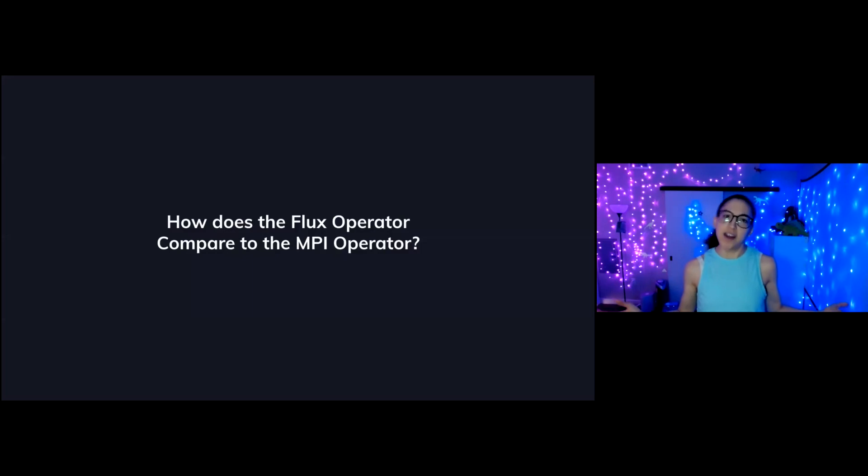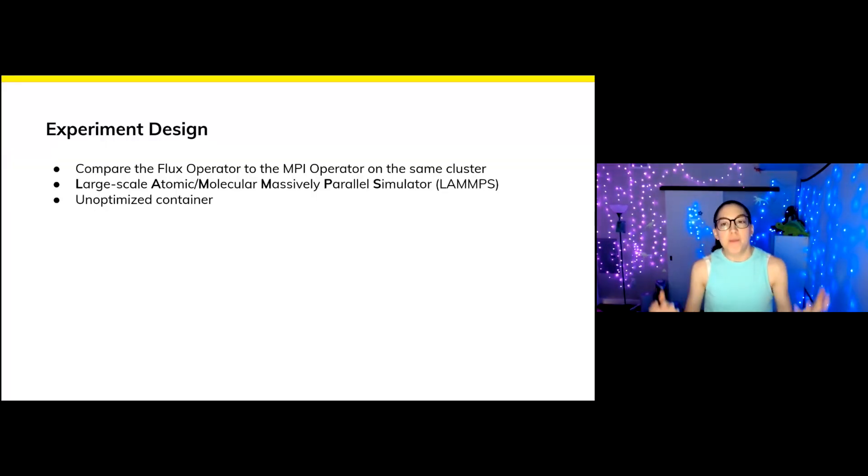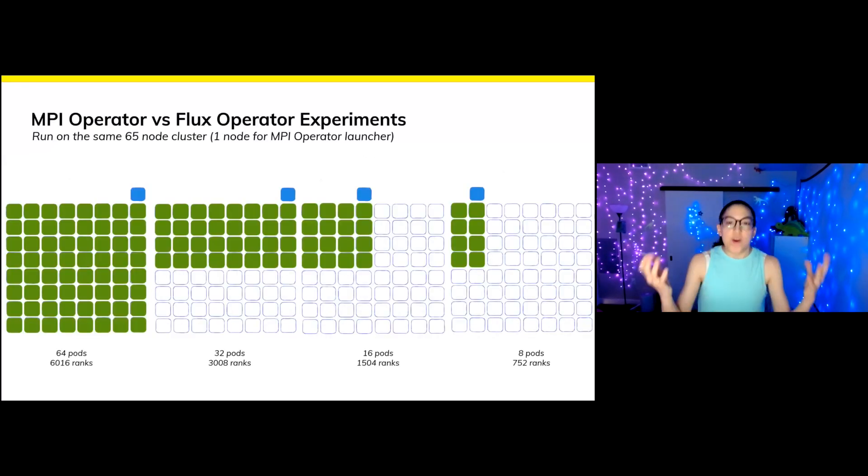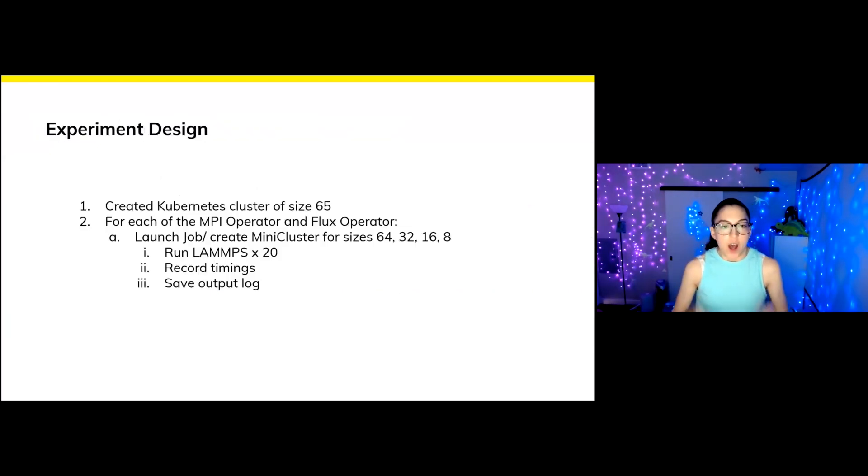So how do they compare? We decided to run an experiment that looked at LAMMPS molecular simulation on unoptimized containers. This is what that experiment looked like. We needed to use a 65 node cluster to account for that extra launcher node. But then we want to test on sizes, basically 64 down to eight of a mini cluster or an index job. And you can also see the corresponding number of ranks, which are the MPI processes. So we're going to create that cluster. And then for each of the operators, we're going to launch a job or create the mini cluster across each of those different sizes. We're going to record timings and save the outputs.